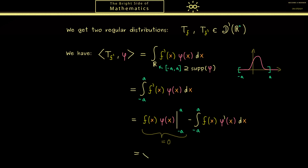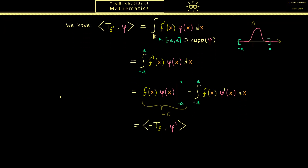We recognize the remaining term is a distribution applied to a test function — specifically the distribution −T_f applied to φ'. We know φ' is also a well-defined test function. So this formula shows that the derivative of f is pushed to the test function φ, with a minus sign. This is how differentiation works for a C1 function, and it motivates the general definition for distributions.